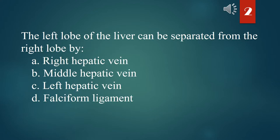The left lobe of the liver can be separated from the right lobe by: A. Right hepatic vein. B. Middle hepatic vein. C. Left hepatic vein. D. Falciform ligament. The answer is B. Middle hepatic vein.